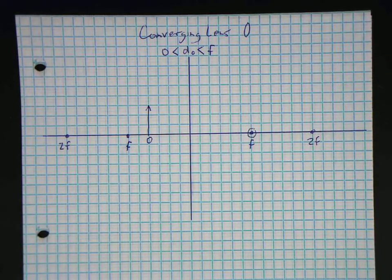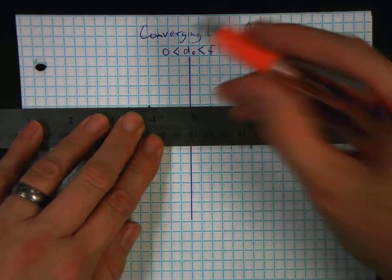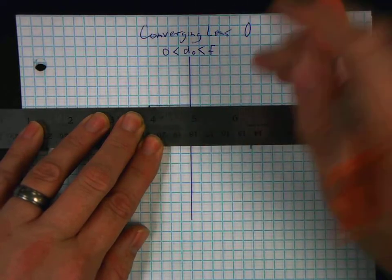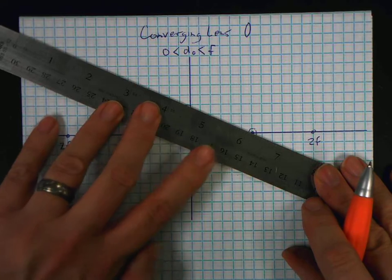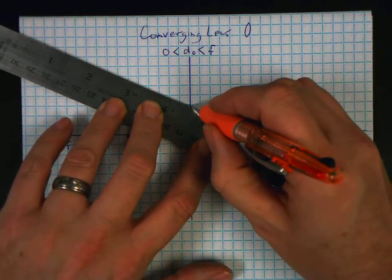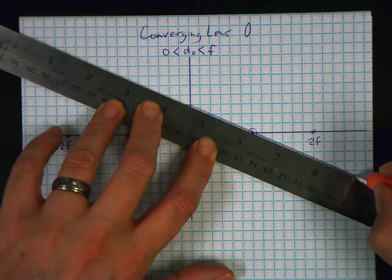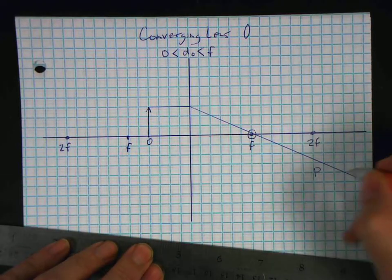The first ray I'm going to draw is the parallel ray, and I'm going to use blue for the parallel ray. So it goes in parallel, then it goes through the actual focal point. Remember, a converging lens means that the angles curve inward. So this is my P ray.